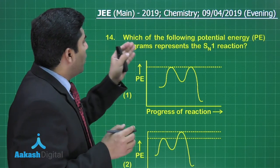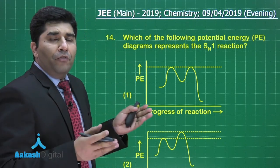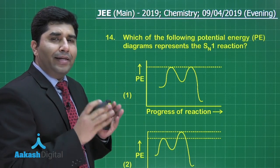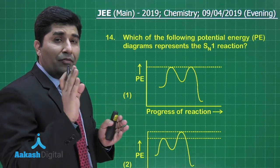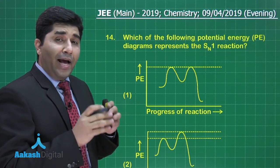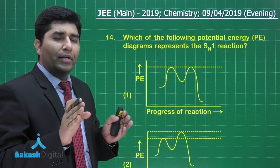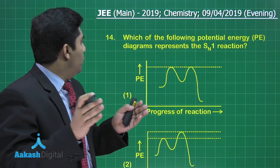In this question, it is asking which of the following potential energy diagram represents SN1 reaction. We know that SN1 reaction takes place in two steps. And the first step is the rate determining step, or the slowest step. And if it is the slowest step, it should have more activation energy than the second one.